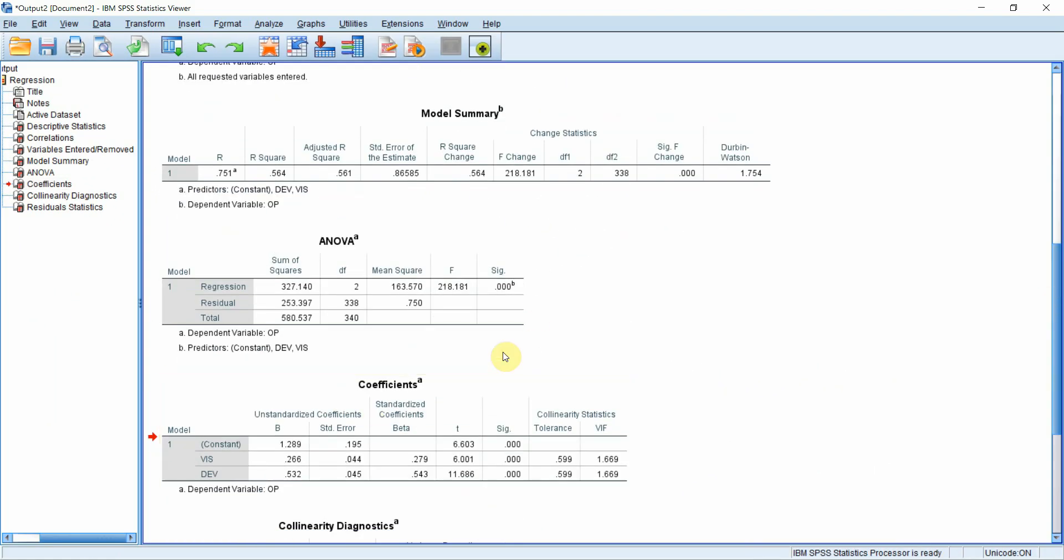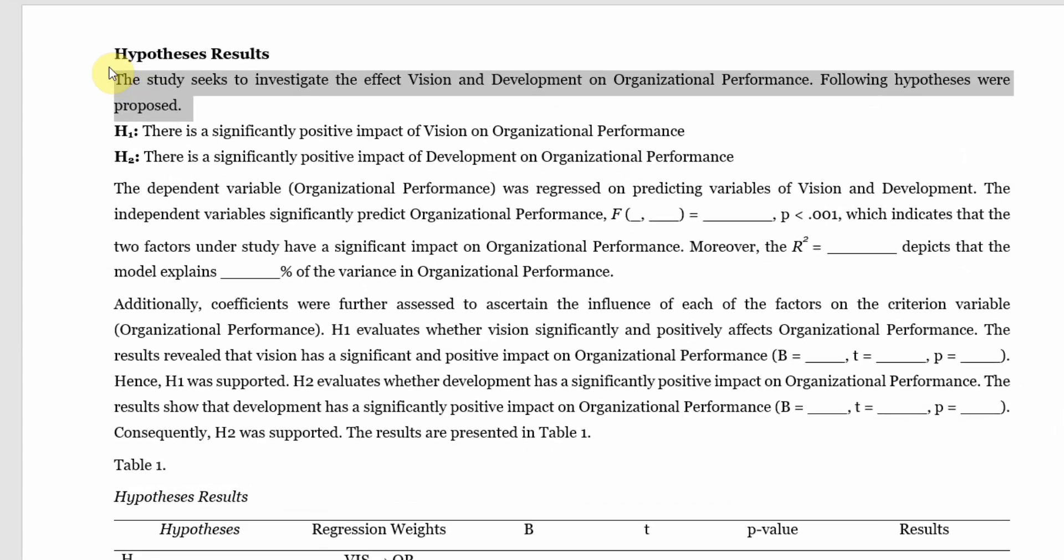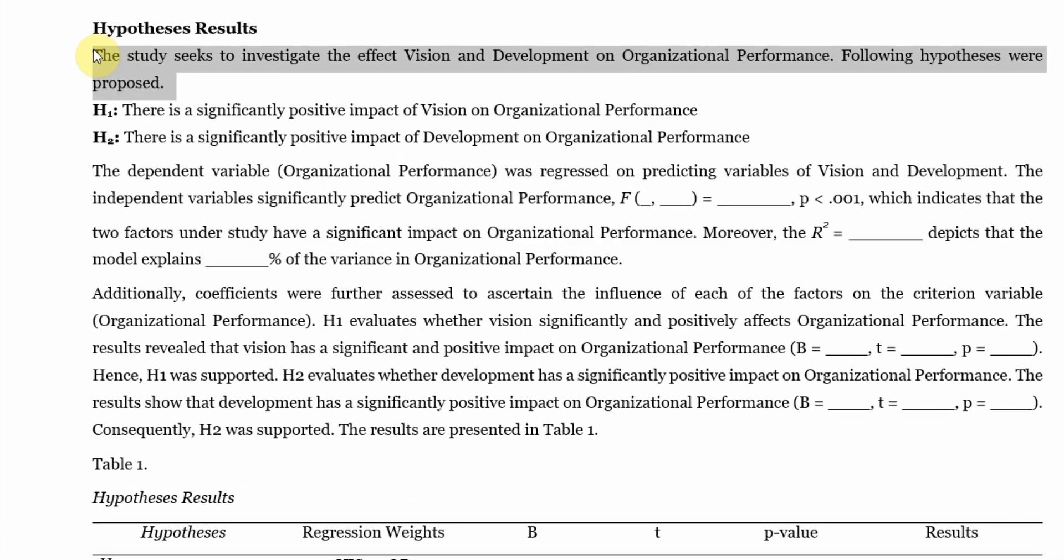Now let's report our results. I've got a template here. This is the objective of my research: to assess the impact of vision and development on organizational performance and the following hypotheses were proposed.